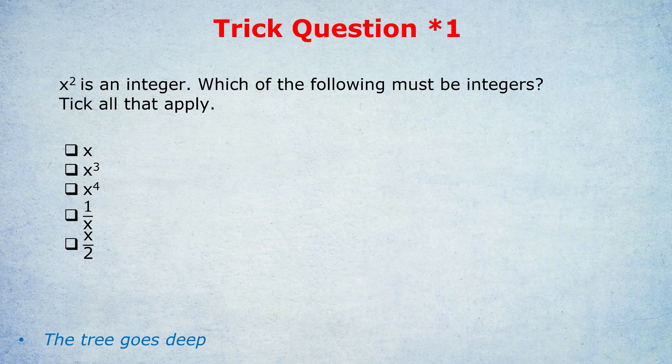The trap here is to think that x must be an integer. You're trying every single number you can think of — negative 2, 2, 0 — all different types of integers, and when you square it it's always an integer. So you're probably saying to yourself, x must be an integer. It doesn't work for decimals, and negatives are still integers. So you'd have ticked the first box, second box, and third box based on the fact that x is an integer.